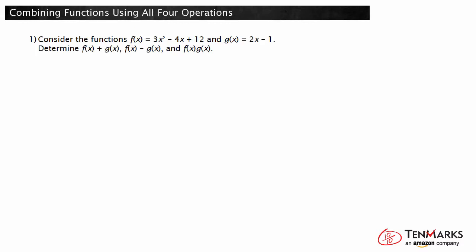Let's look at an example. Consider the functions f equals 3x squared minus 4x plus 12 and g equals 2x minus 1. Determine f of x plus g of x, f of x minus g of x, and f of x times g of x.